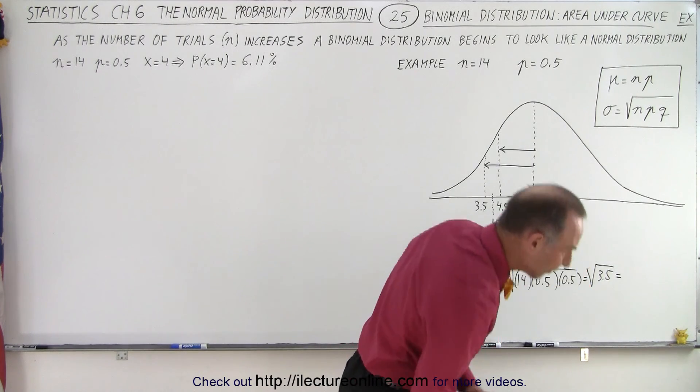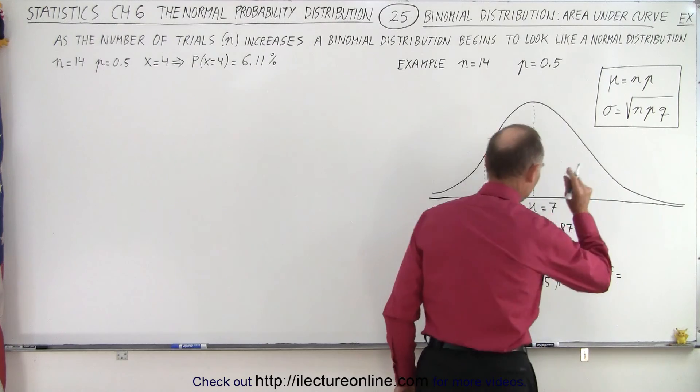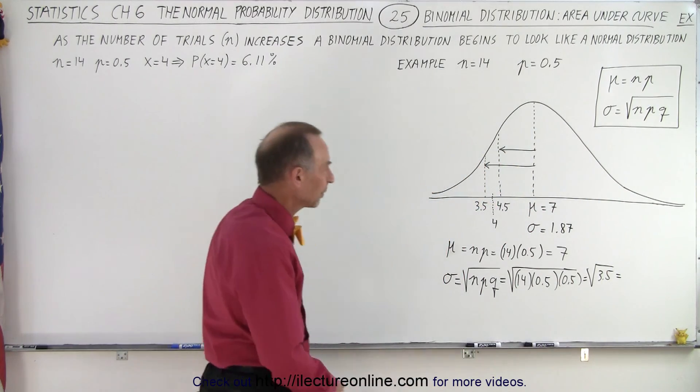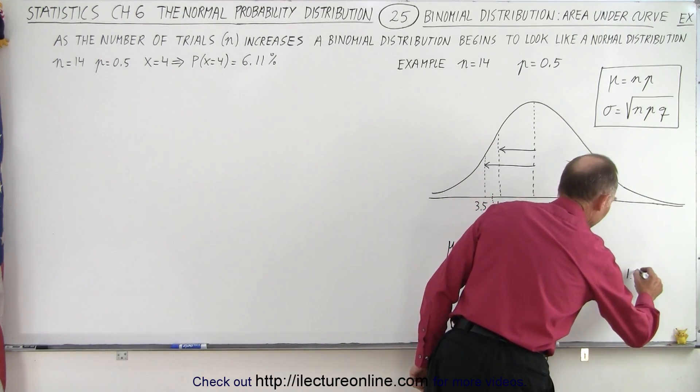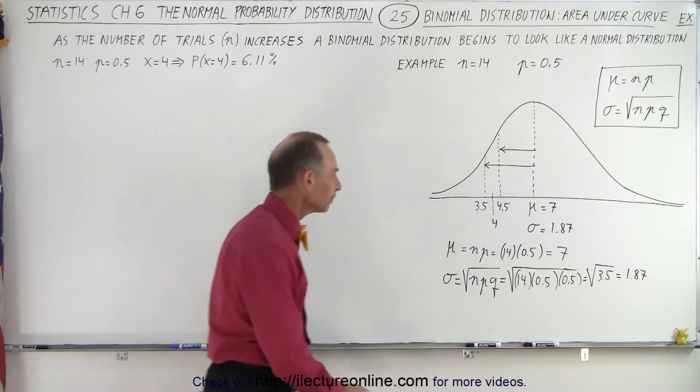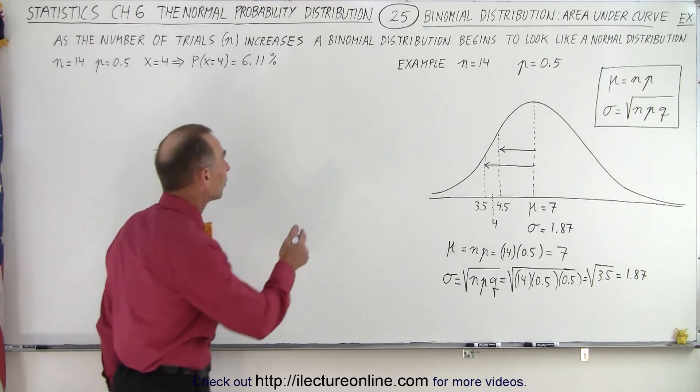1.871, that's close enough. 1.87, we'll just call it 1.87 because the numbers don't need to be absolutely accurate, so 1.87 would be the result of that. All right, that's good enough.